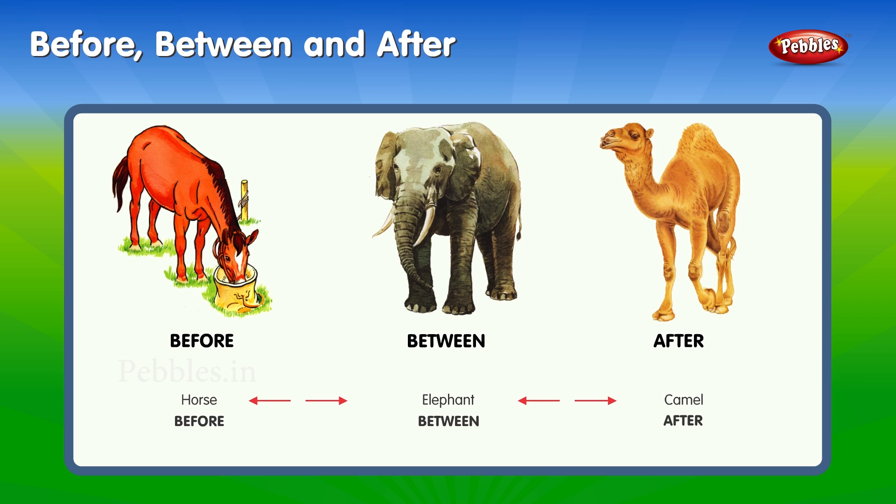Horse, elephant, camel. Before, between, after. Horse is before the elephant. Camel is after the elephant. Elephant is between the horse and the camel.